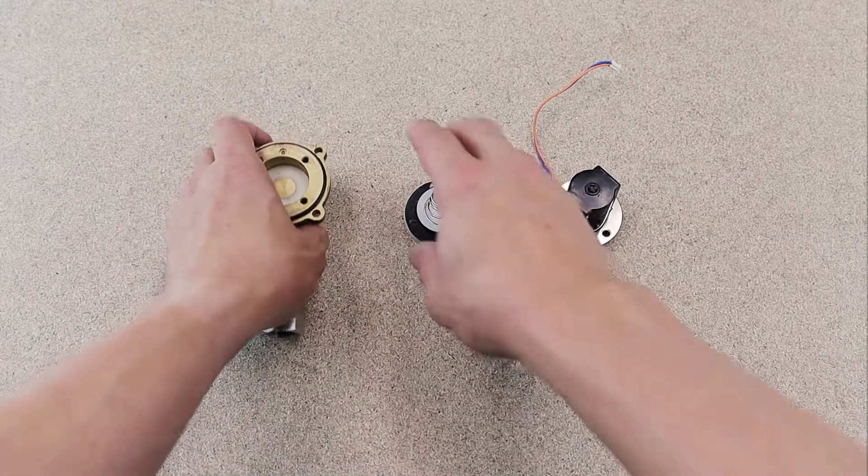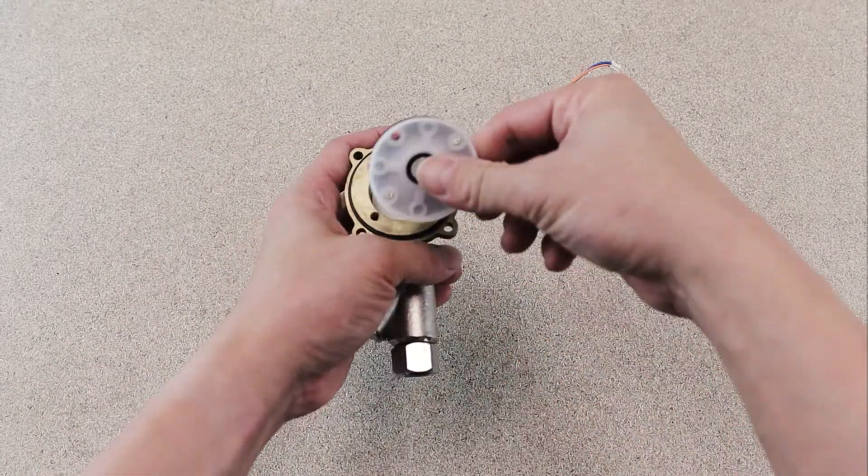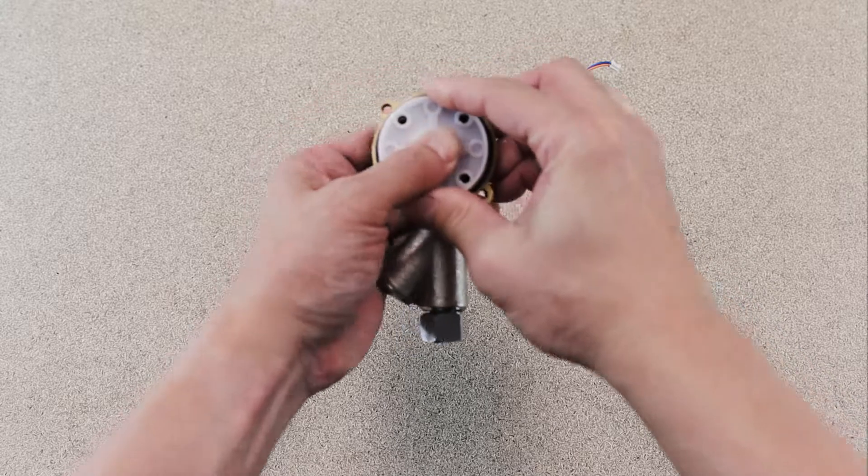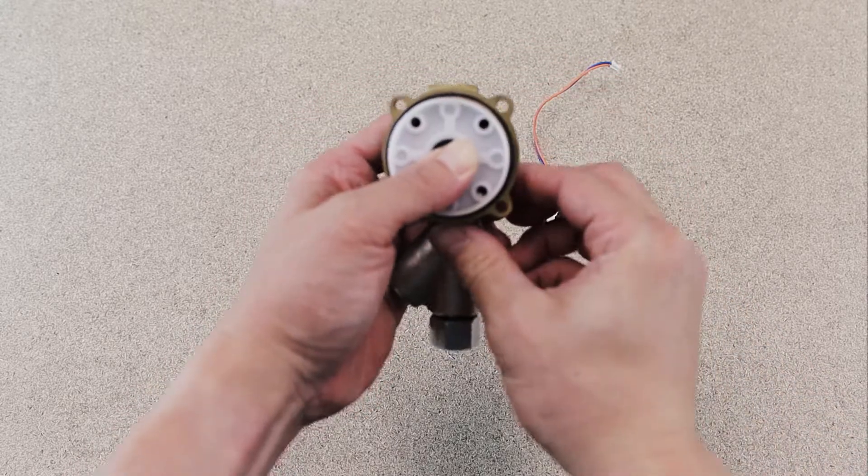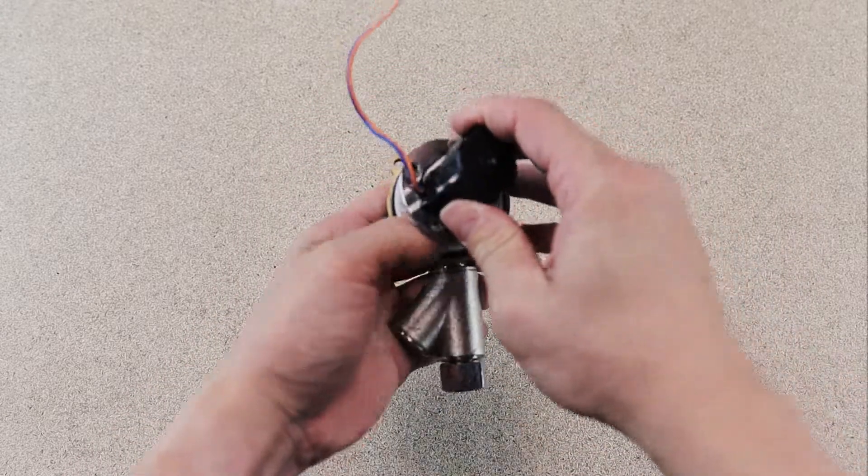Reassemble the solenoid valve assembly by seating the valve seat, aligning the holes on the valve seat with the screw holes on the solenoid valve module. Install the coil onto the assembly.